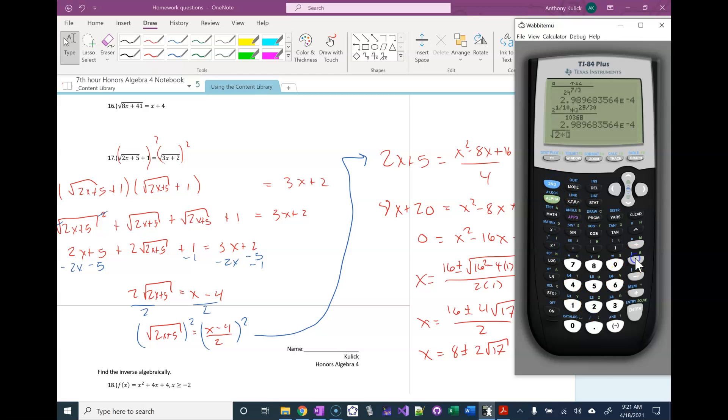So 2 times 8 plus 2 square root of 17, plus 5 and then plus 1 on the outside. So that's one of the answers plugged into the left-hand side. Gives me this decimal.